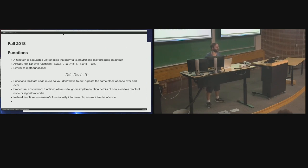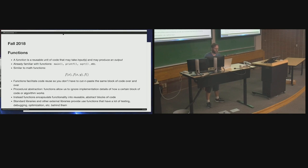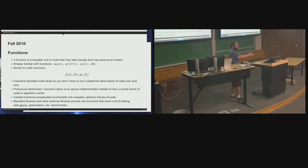Without functions, we would have to worry about every single line of code over and over again. Standard libraries and other external libraries provide useful functions that have a lot of testing, debugging, and optimization behind them. Use them. One of the reasons we like to write functions is that we can package them up into libraries. We can write test cases, optimize them, put thousands of man-hours into testing and making them as fast and efficient as possible. By putting functionality into a function and a library, everybody benefits.